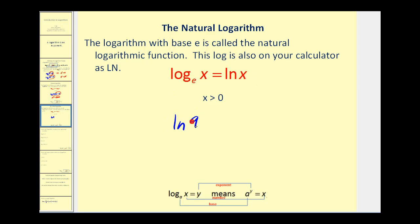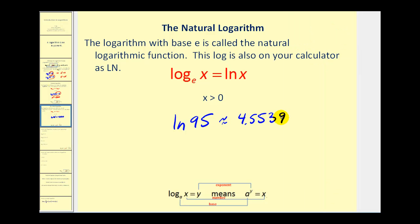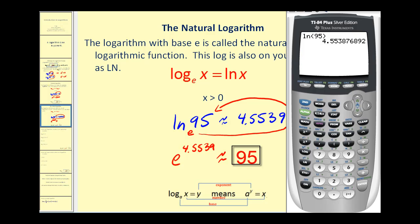So for example, if we type in natural log of ninety-five on the calculator, here's the natural log key, we're going to get a decimal approximation. It's approximately four point five five three nine. So what does that mean? Remember, natural log means log base e. So that means e to the power of four point five five three nine is approximately equal to ninety-five. We did round this, it won't be exact, but let's go ahead and check it. So if we press second natural log, it brings up base e. We can type in our exponent, and you can see it's approximately ninety-five.